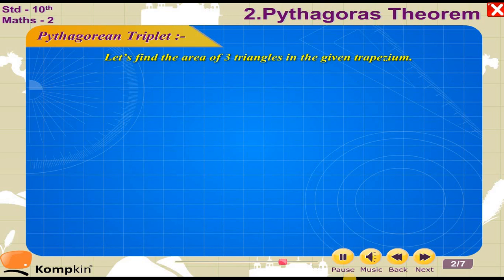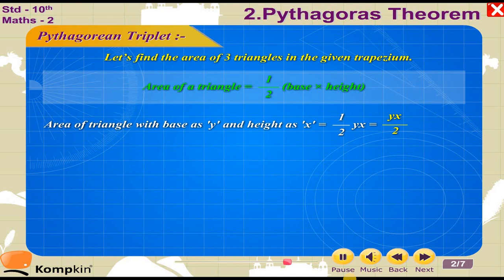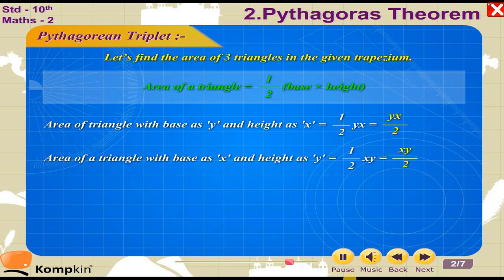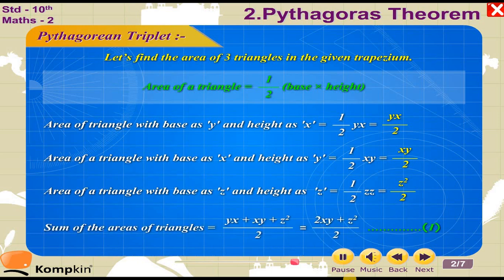Let's find the area of the three triangles in the given trapezium. Area of a triangle = (1/2) × base × height. Area of triangle with base Y and height X = YX/2. Similarly, area of triangle with base X and height Y = XY/2. Area of triangle with base Z and height Z = Z²/2. Sum of areas of triangles = (YX + XY + Z²)/2 = (2XY + Z²)/2 ... (1)